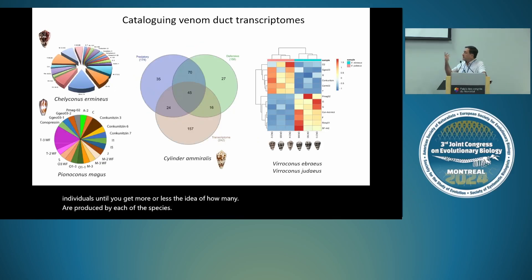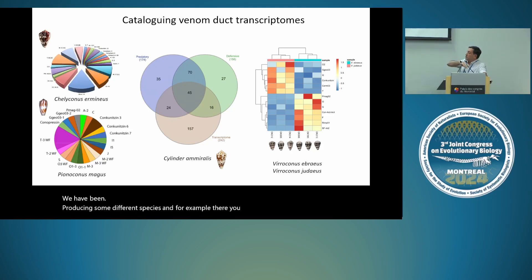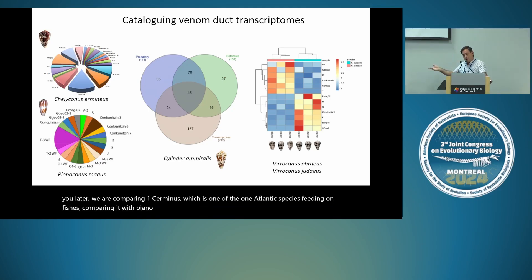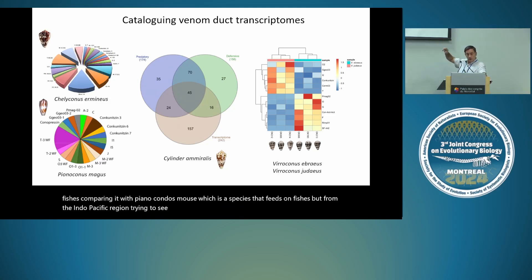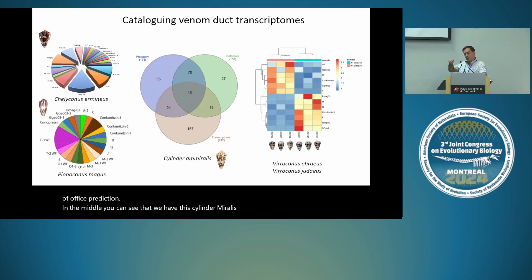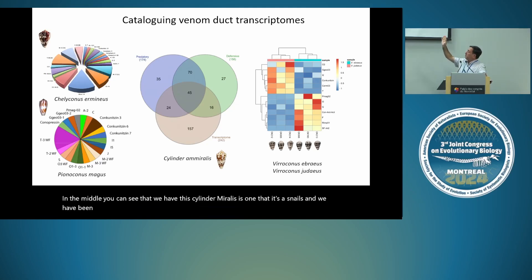We have been producing transcriptomes of different species. We are comparing Keliconus arminius, an Atlantic species feeding on fish, with Pionoconus magus, a species that also feeds on fish but from the Indo-Pacific region, to see how different those two independent origins of fish predation are. In the middle we have Cylinder amiral, which eats snails, and we've been looking at predatory versus defense evoked venoms, all at the transcriptome level.